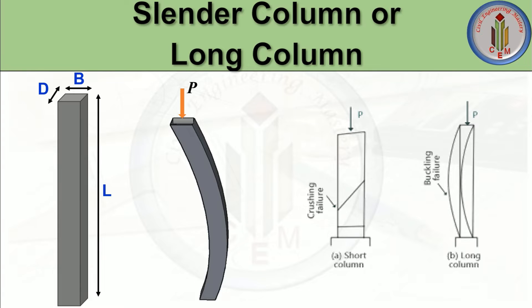And according to slenderness ratio, we can classify the column into long column and short column. In this video, we are going to discuss what is a long column or slender column, and what are the additional moments we need to consider due to the long column effect. Without delay, let's start now.